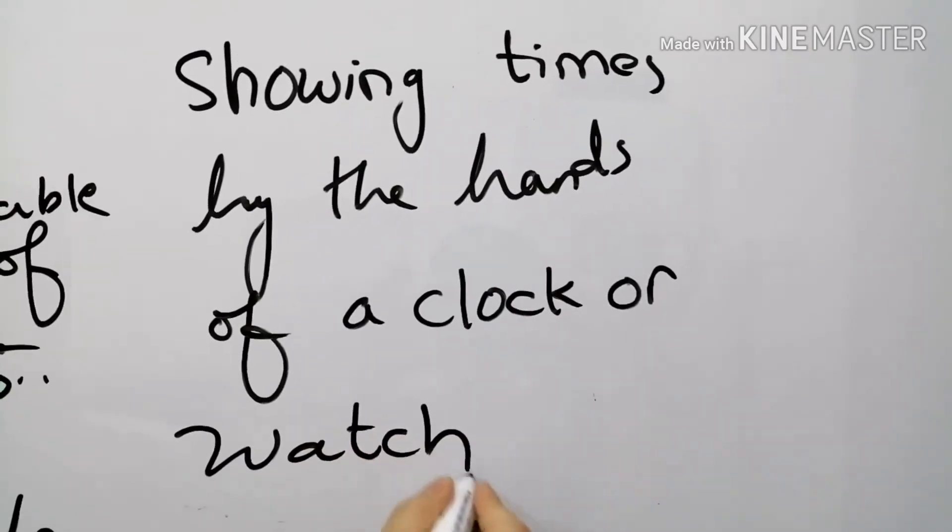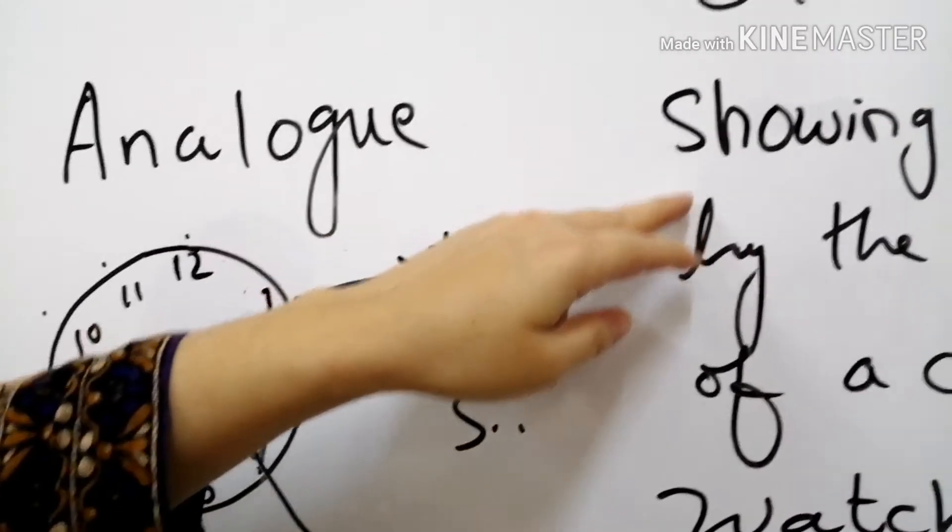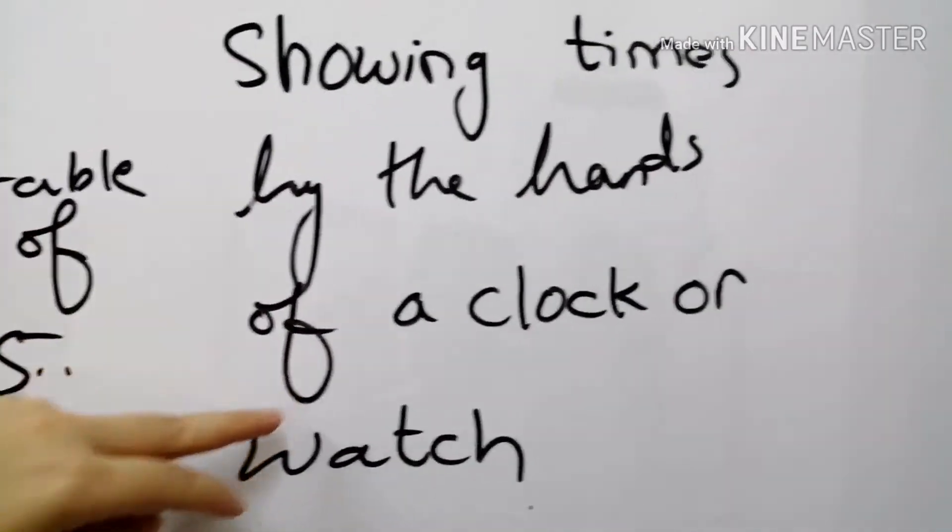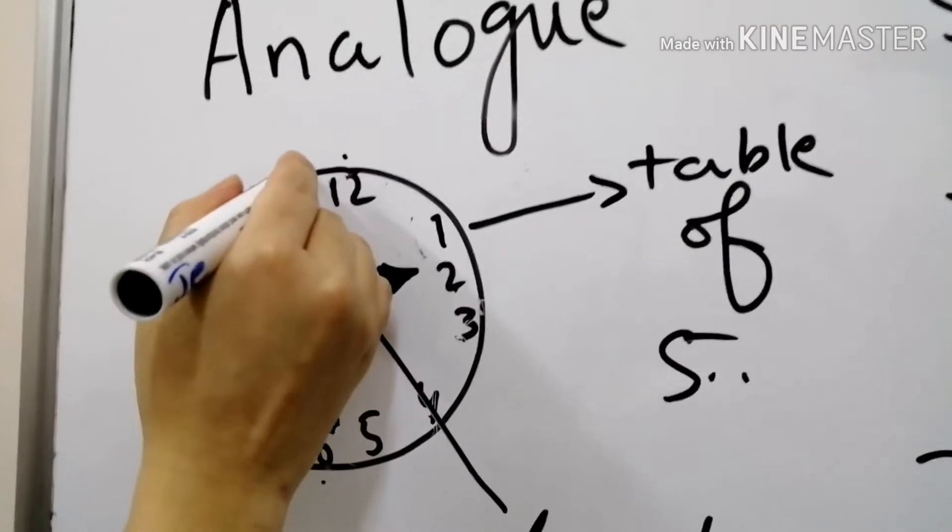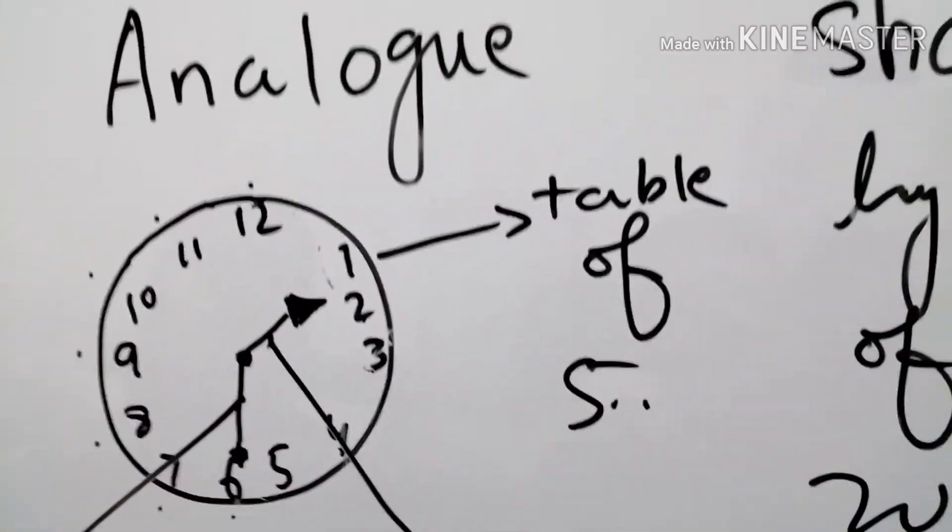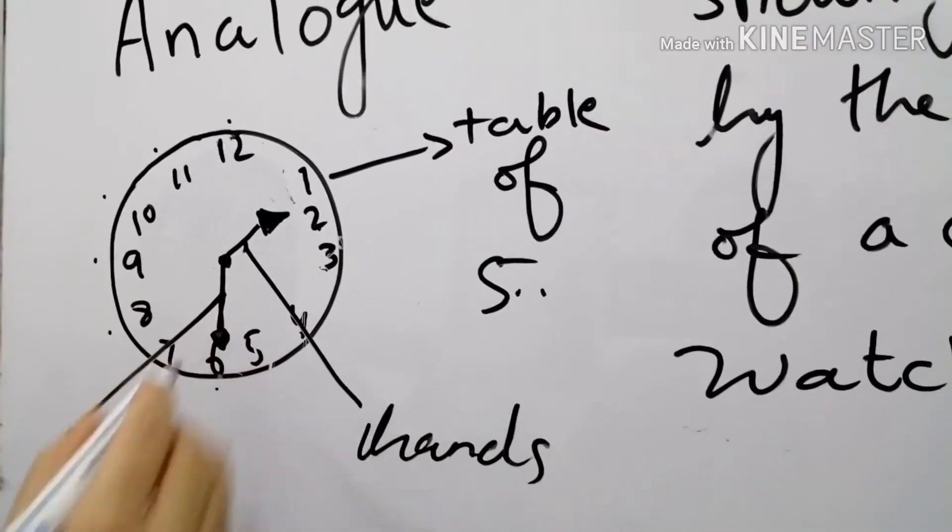Say with me. Analog is a clock. Analog is a clock that shows the time with the help of its hands. These needles are the hands.